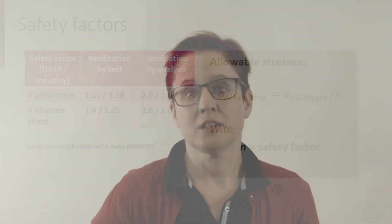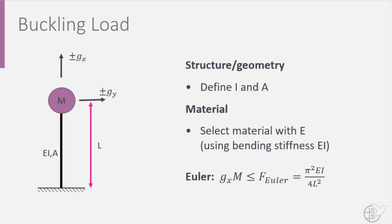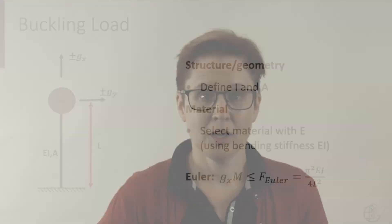The second criterion that must be met is the buckling load. Again, based on the minimum natural frequencies, determine values for A and I and then select the material. Using the Euler buckling criterion, determine whether the launch load in the axial direction — Gx times the weight of the spacecraft — is smaller than the specified buckling load of the structure you designed. If your design meets all these requirements, it is one step closer to being launched.